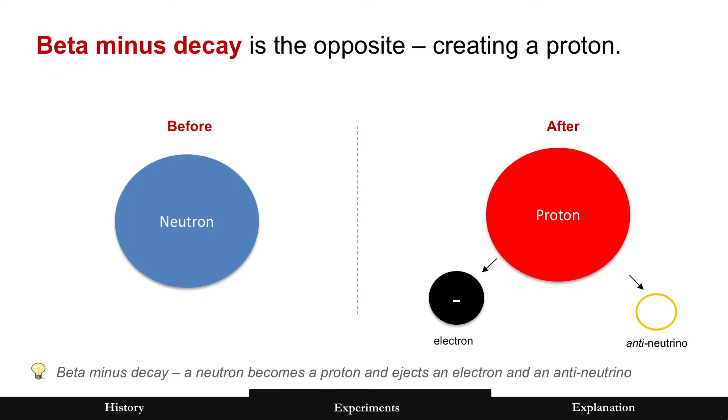And beta minus decay is just the opposite. It's a neutron that can become a proton, but here's more particles. An electron and an anti-neutrino come out of a neutron. Why?